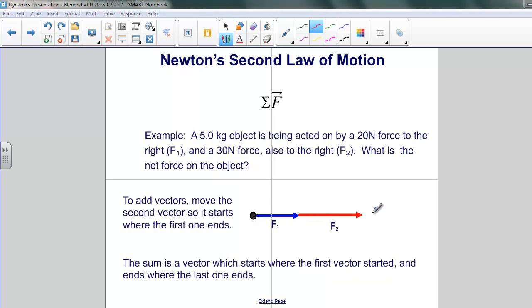And so now we see these two vectors pointing in the same direction with slightly different lengths to represent their different magnitudes. Now we have the two vectors, F1 and F2. They're both pointing in the same direction. But to add them, you may recall that the straightforward way is to line them up so that one begins where the other leaves off. That's what we call head-to-tail.